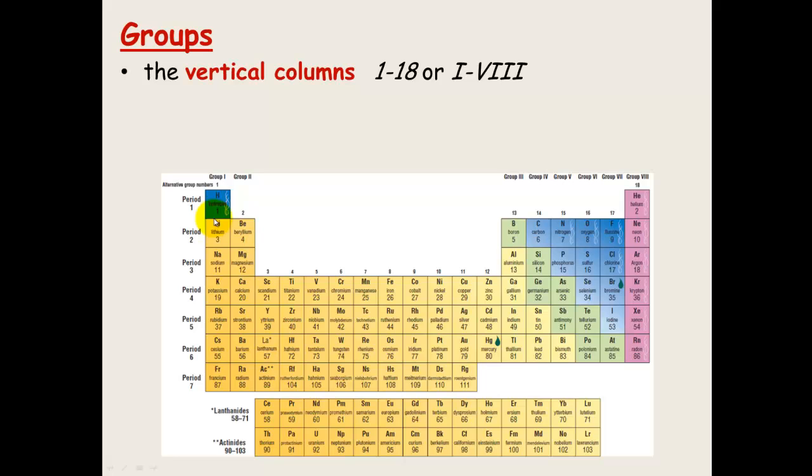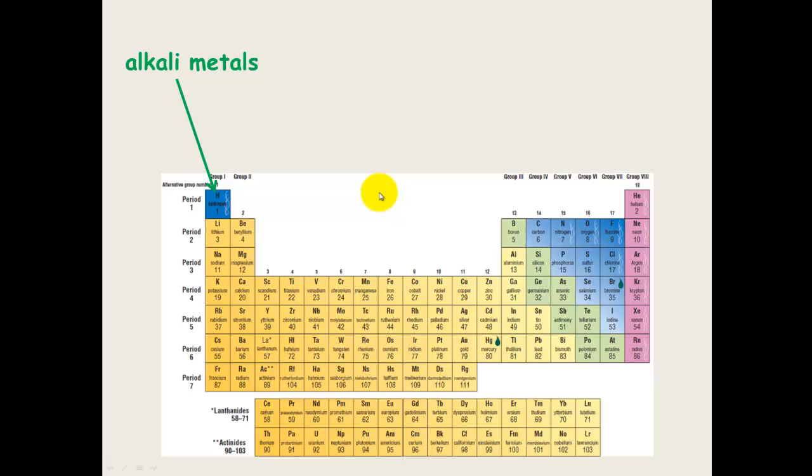Groups. Groups are the vertical columns. So we have group 1, group 2, group 3, group 4, group 5, group 6, group 7 and so on. They can also be numbered in the older-fashioned way, which is using Roman numerals. So we've got group 1, group 2. We skip the transition metals and we have group 3, group 4, group 5, group 6, group 7 and group 8. I find these are still much easier to work with. They indicate the number of electrons in the outer shell. And that's why these ones are much easier to work with because group 1 has 1 in the outside shell, group 2 has 2 in the outside shell and group 3 has 3 in the outside shell.